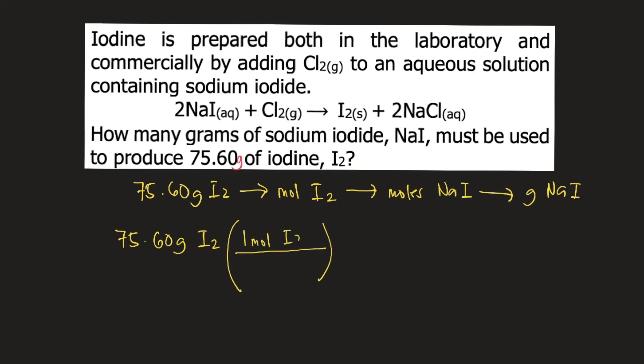So 1 mole of I2 is equal to 253.8 grams of I2. So grams of I2 will cancel. We are left with moles of I2.